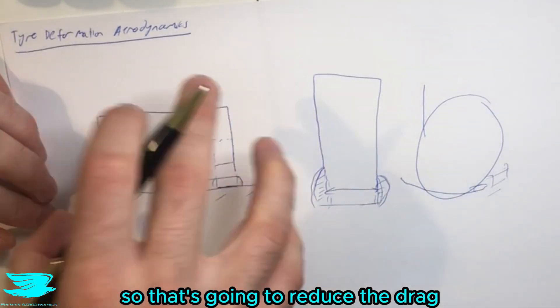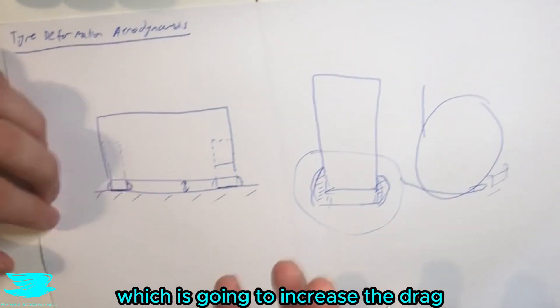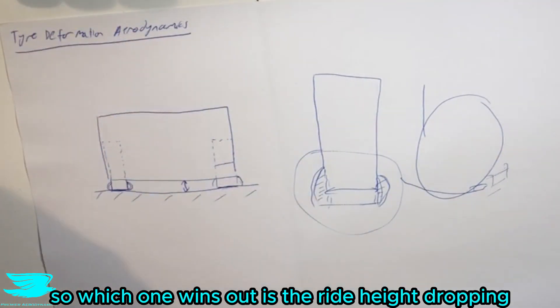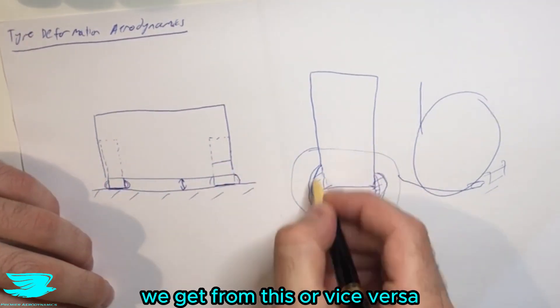That's going to reduce the drag, but we have still this occurring here which is going to increase the drag. So which one wins out? Is the drag drop that we get from the ride height dropping going to be greater than the drag increase we get from this, or vice versa?